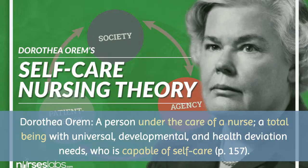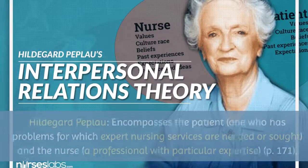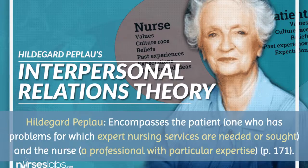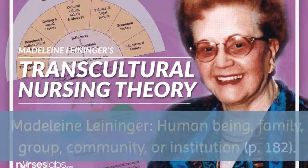Dorothea Orem's Theory of Self-Care defined person as a person under the care of a nurse — a total being with universal developmental and health deviation needs who is capable of self-care. Hildegard Peplau defined person as encompassing the patient — the one who has problems for which expert nursing services are needed or sought — and the nurse, a professional with particular expertise. So to Peplau, person was this interaction of the patient and the nurse together.